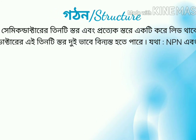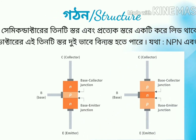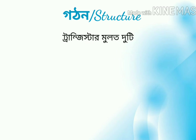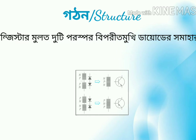A transistor is a semiconductor device. It has three terminals. The second classification is NPN and PNP types. The transistor has a small system which makes it the most important and useful device in electronics.